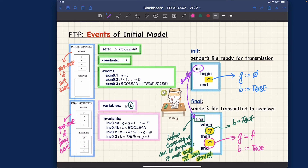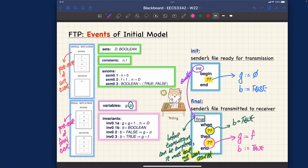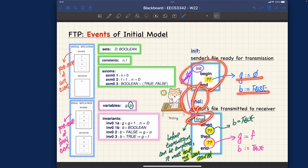Even though it's simple, there is rationale behind the design. In this abstract model, transmission is instantaneous: init initializes g and b to stand by, and as soon as the final event occurs, the transmission is simply instantaneous and magical. But that's acceptable — it is only the most abstract initial model. We are going to refine what happens in the middle of the transmission process later. The later refinements will elaborate on the communication and transmission process; here it is simply instantaneous.